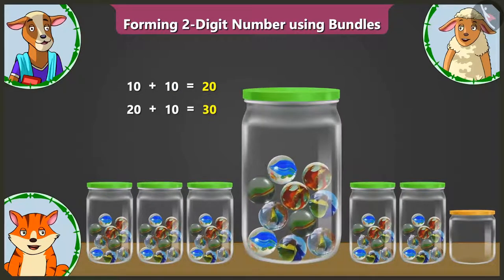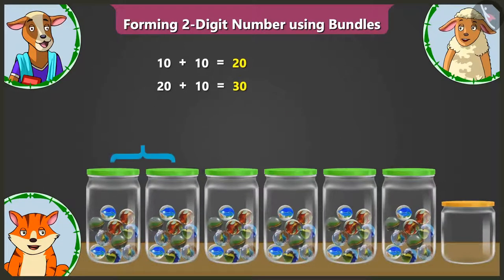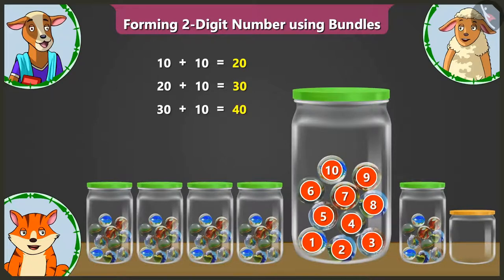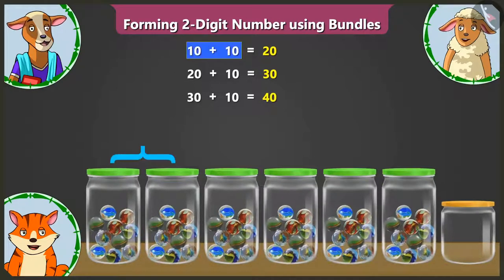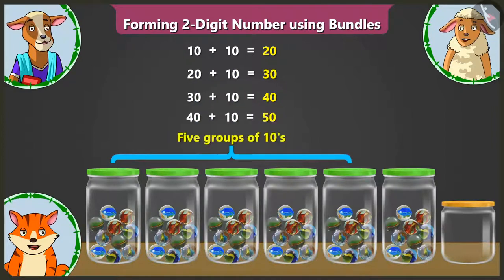Now, Lily, you count the marbles in the fourth jar. In the fourth jar, there are one, two, three, four, five, six, seven, eight, nine and ten marbles. Absolutely right. So these are twenty, thirty, forty — four groups of tens. This fifth jar also has ten marbles. That makes it fifty — five groups of tens.